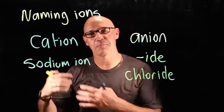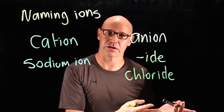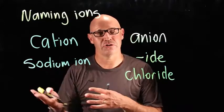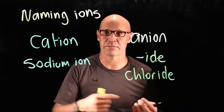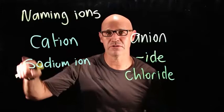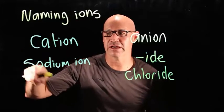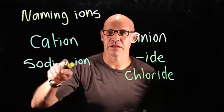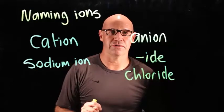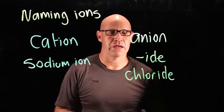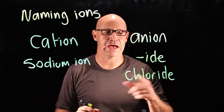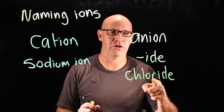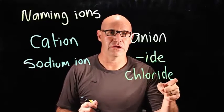We've got magnesium oxide, sodium nitride, for example. So always the metal, or the cation, is just the name of the element with 'ion' on the end of it. And the anion is like the element name, but it ends in '-ide.'